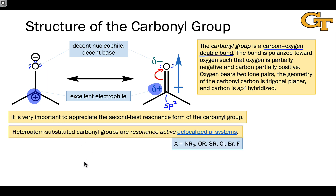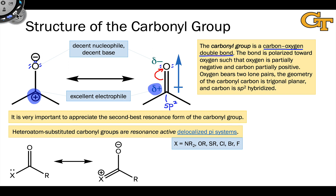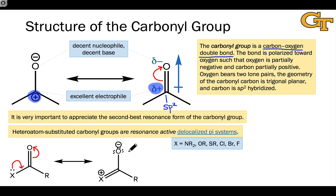Heteroatom-substituted carbonyl groups are also important to consider. In these structures, a heteroatom typically bearing a lone pair is connected to the carbonyl group. These structures are resonance-active because they contain a good electron source — the lone pair on the heteroatom — adjacent to a good electron sink, the C=O pi antibond. We can draw a resonance form where the heteroatom has formal positive charge and the oxygen has formal negative charge. This reveals enhanced basicity of the carbonyl oxygen when the heteroatom is a good electron-donating group such as NR₂ or OR.